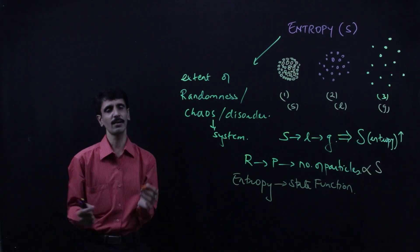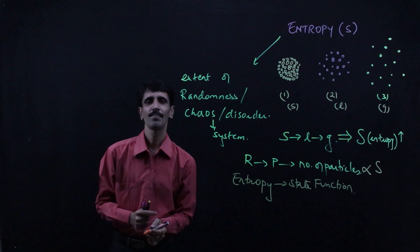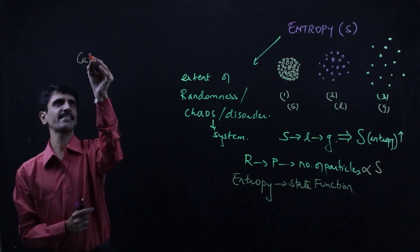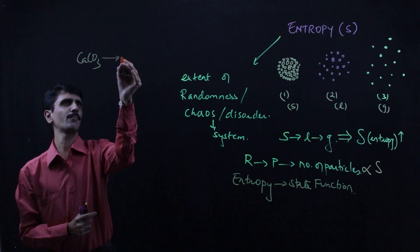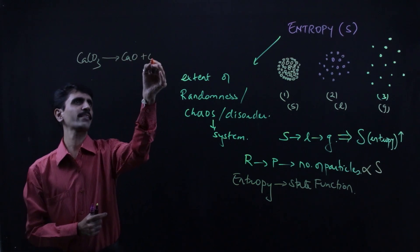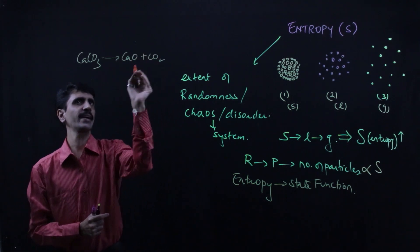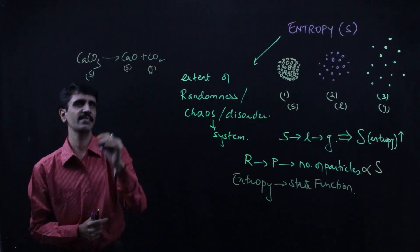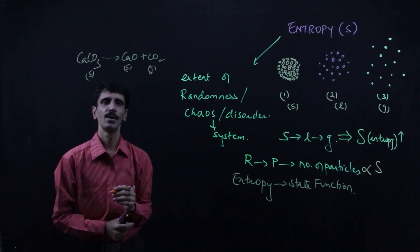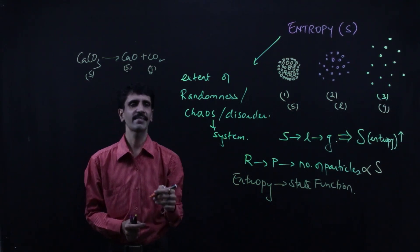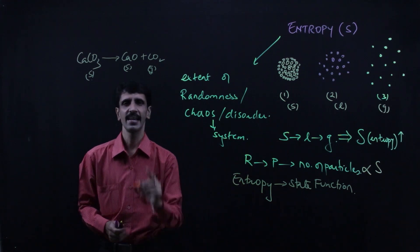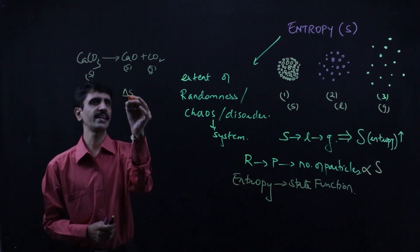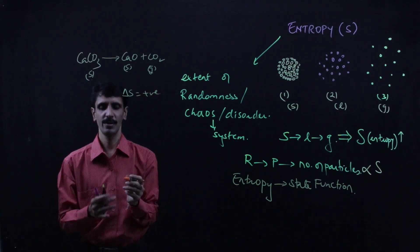Let me give you some examples. Calcium carbonate decomposes to give calcium oxide and carbon dioxide: CaCO₃ (solid) → CaO (solid) + CO₂ (gas). Here a solid is getting converted into a gas, so the disorder increases, ΔS will be positive.